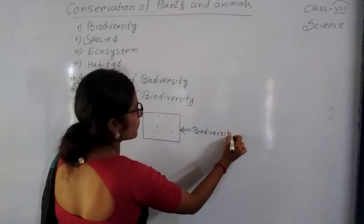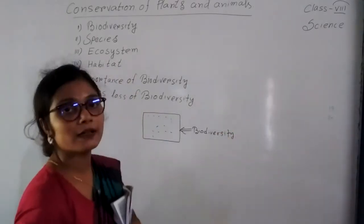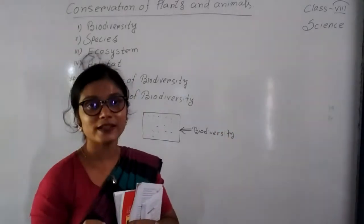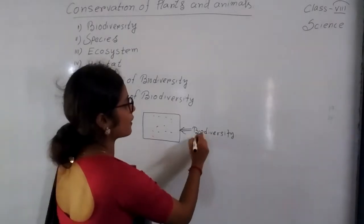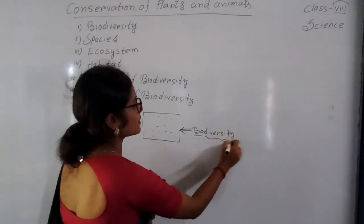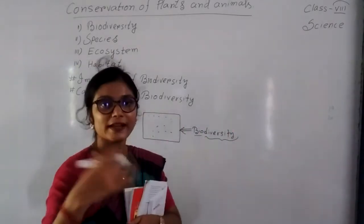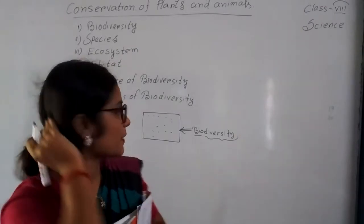Bio means the presence of plants or living things. Bio and diversity means the variety of animals and living organisms that are present.